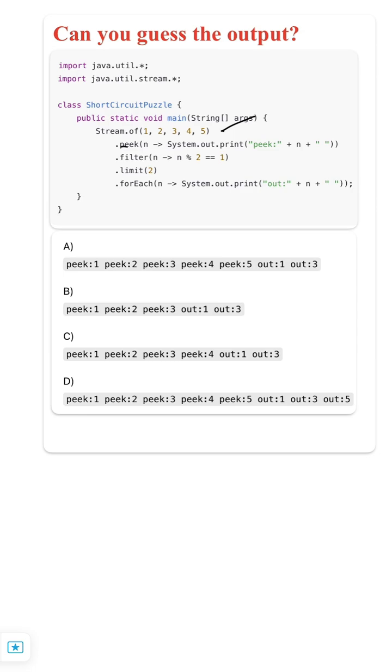Then we are calling a peak method and we are printing peak of n value. Then we are filtering with odd numbers, then we are limiting for 2, and again we are iterating. Then we are printing out of n.